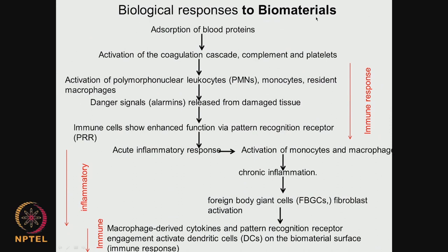Further into biological response to biomaterials: initially, proteins get adsorbed, then there is activation of the coagulation cascade, activation of the complement, and activation of platelets. The blood contains many of these elements. Then activation of polymorphonuclear leukocytes (PMN), monocytes, and resident macrophages follows. Danger signals are released from damaged tissues, and immune cells show enhanced function via pattern recognition receptors (PRR). All these constitute the immune response.